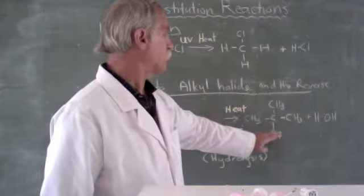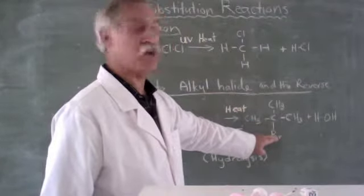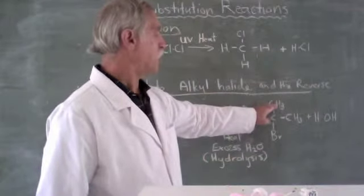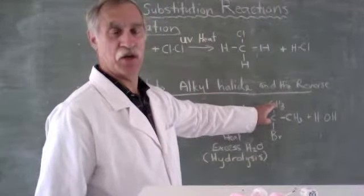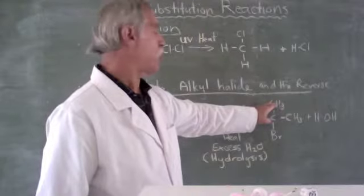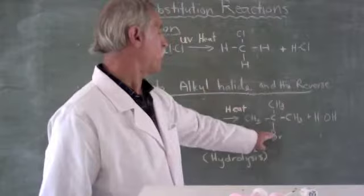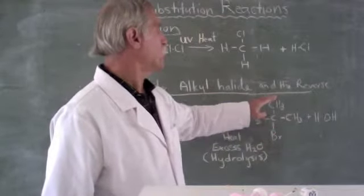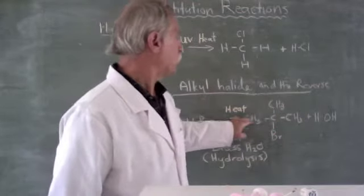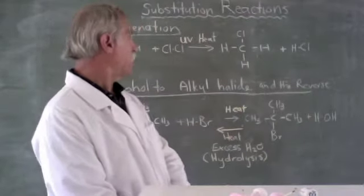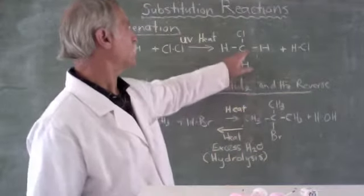But on carbon number 2, it's got a bromine. So, it's going to be 2-bromo. And it's also got a methyl chain. 2-methyl-propane. So, it's 2-bromo-2-methyl-propane. And that is the names of these substances.